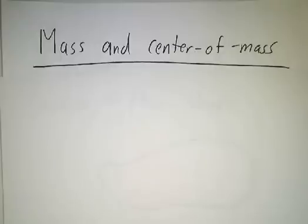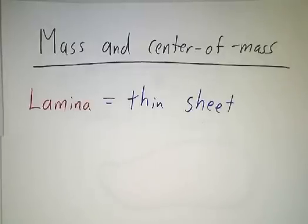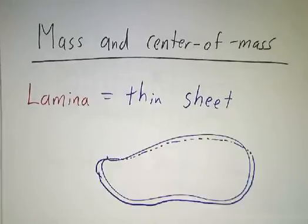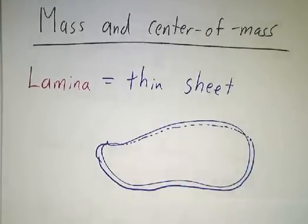In this video, we're going to start to study the use of double integrals in physics. We're going to start by looking at the mass and the center of mass of an extended object. The things we're going to look at are called laminas. A lamina is a thin sheet — imagine you've got some thin sheet of metal.